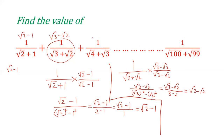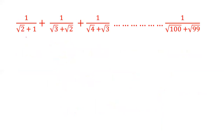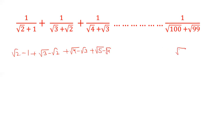Following the same pattern, the third term will be root 4 − root 3, and so on, till the last term will be root 100 − root 99. So writing down all the values: first term is root 2 − 1, second term is root 3 − root 2, third term is root 4 − root 3, next term is root 5 − root 4, the second-last term is root 99 − root 98, and the last term is root 100 − root 99.